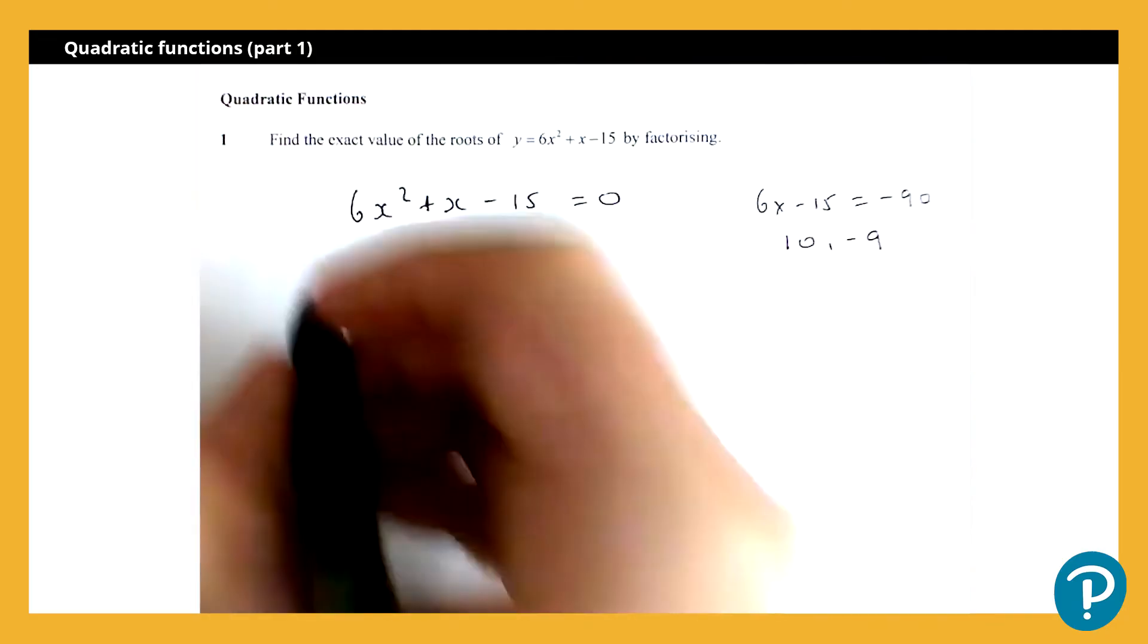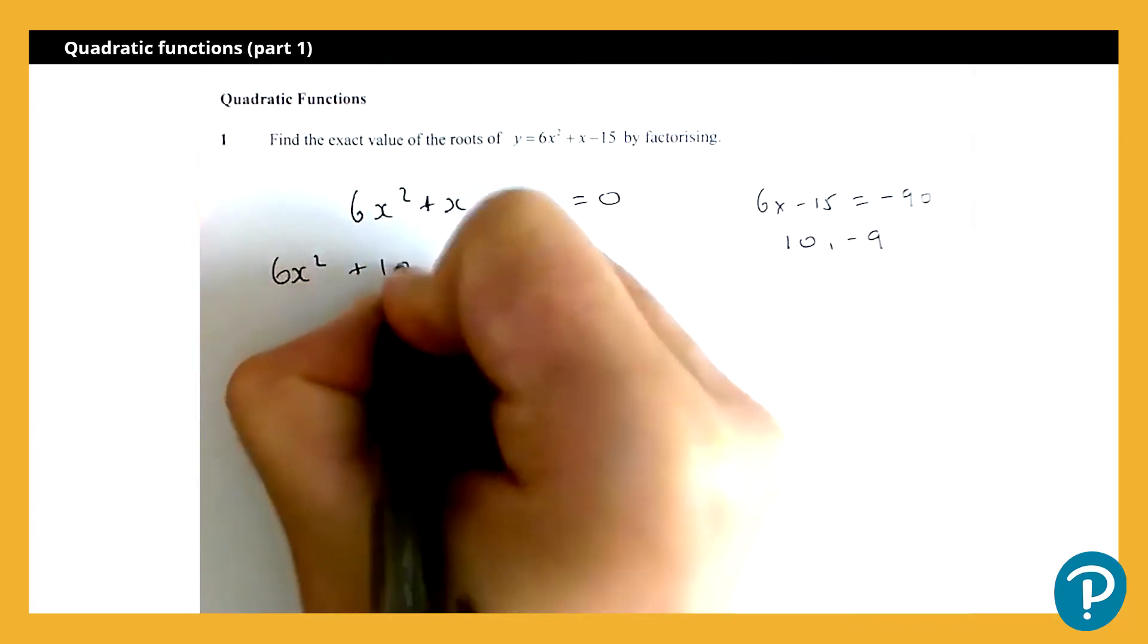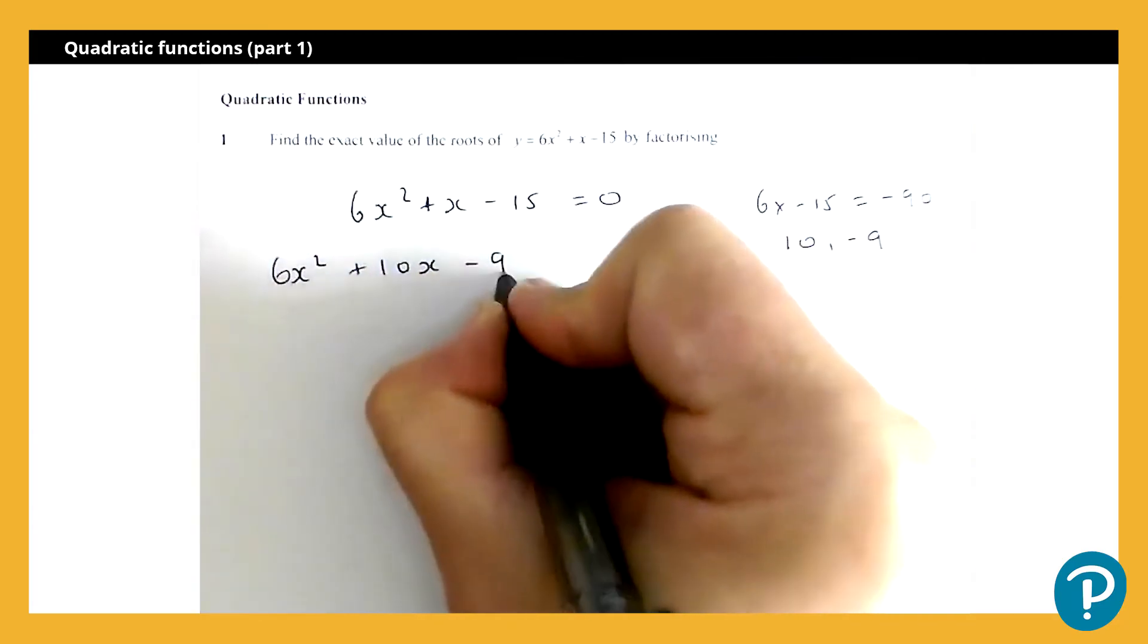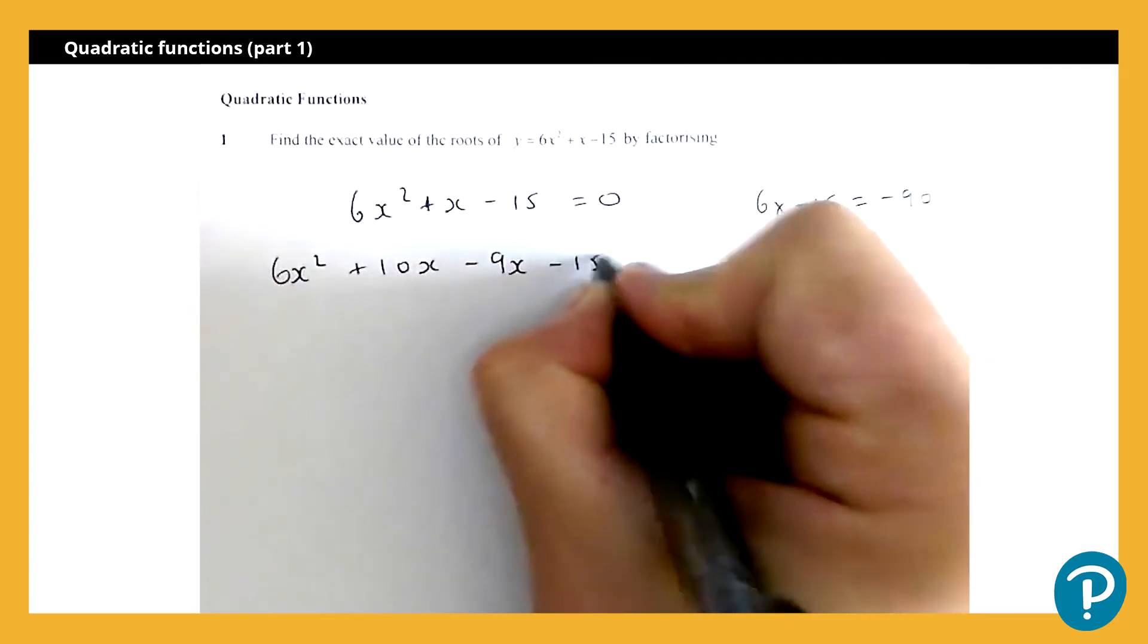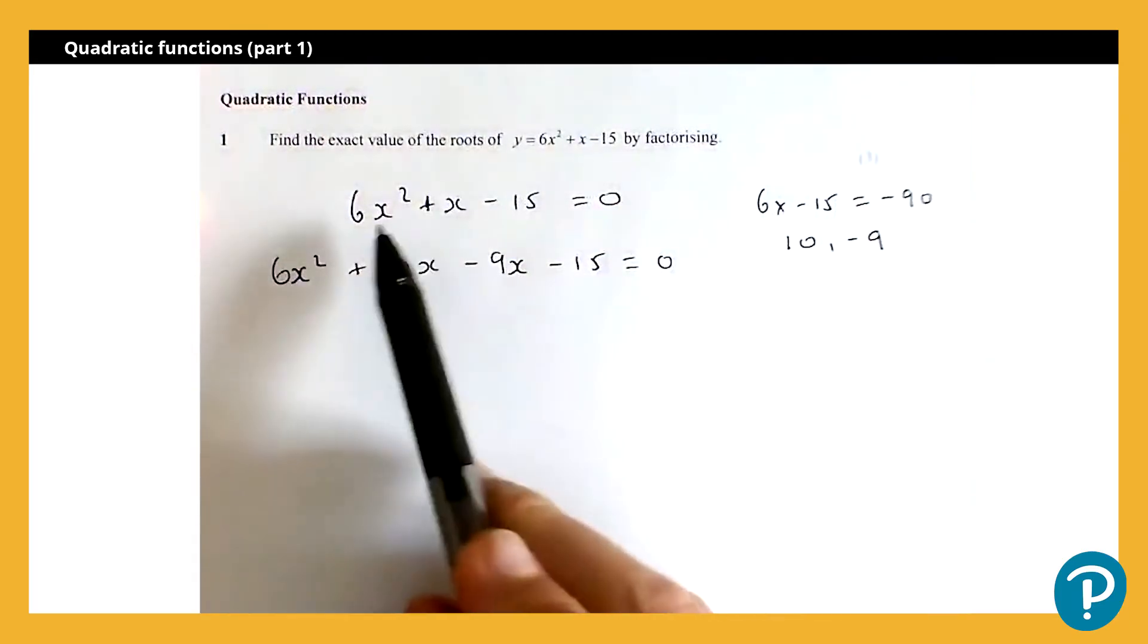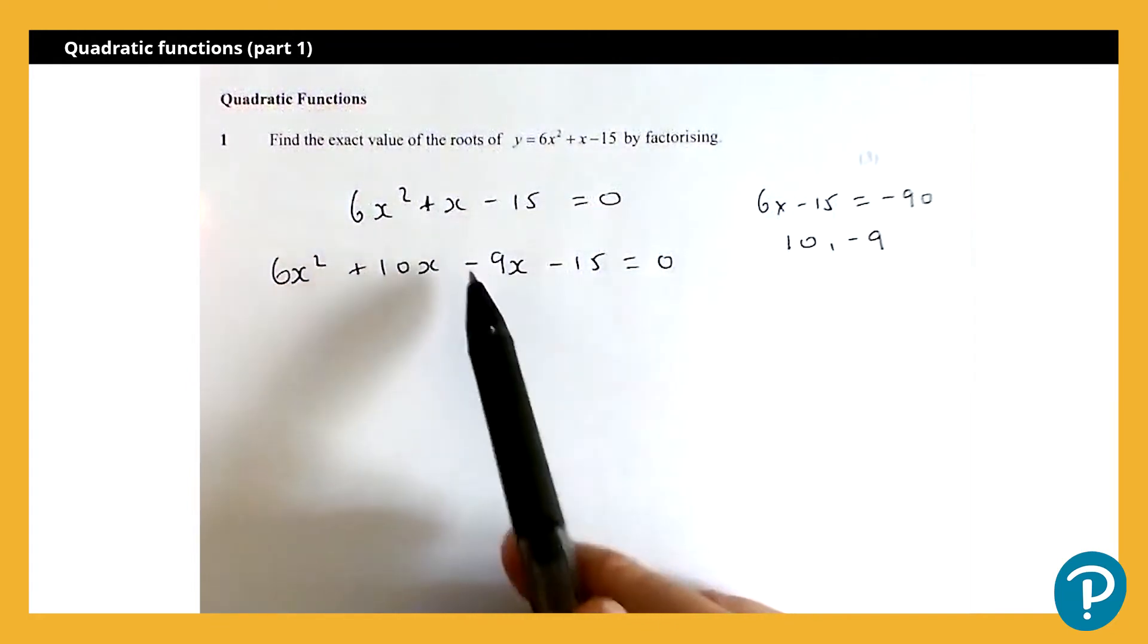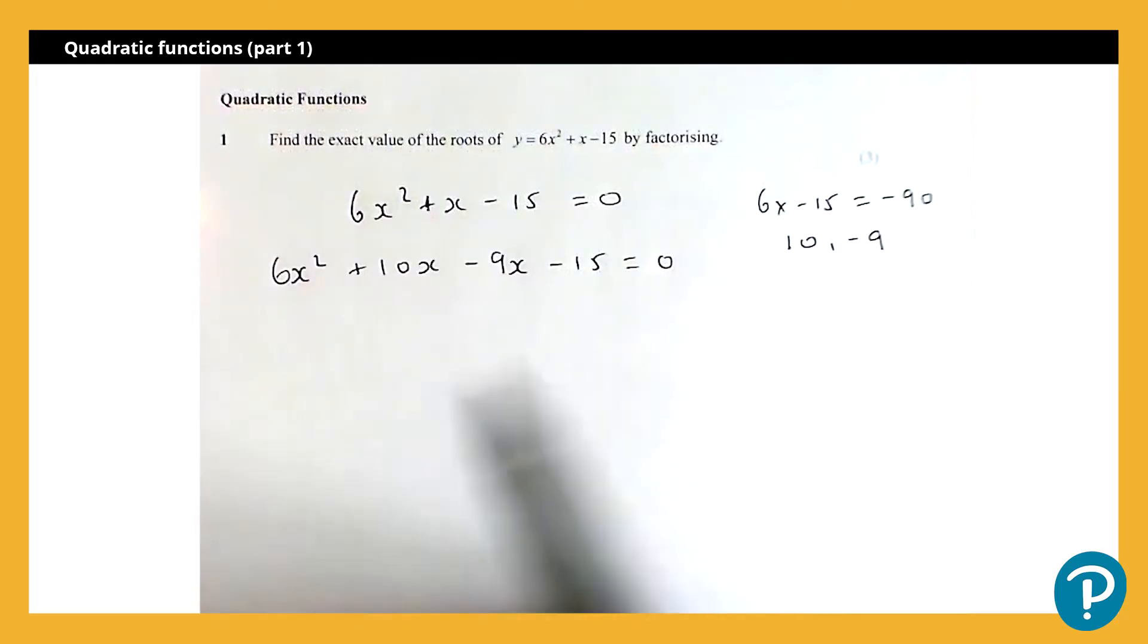So I'm going to rewrite this expression here as 6x squared plus 10x minus 9x minus 15 equals 0. So this expression here is equivalent to the expression above, because if I was to simplify the 10x, subtract 9x gives me 1x, so it's all fine.